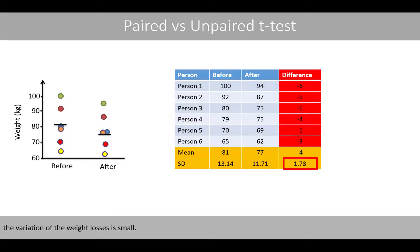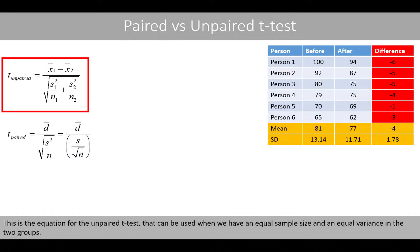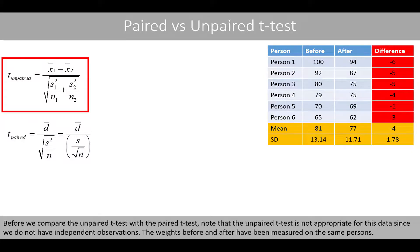This is the equation for the unpaired t-test that can be used when you have an equal sample size and equal variance in the two groups. Before we compare the unpaired t-test with the paired t-test, note that the unpaired t-test is not appropriate for this data, since we do not have independent observations. The weights before and after have been measured on the same persons.